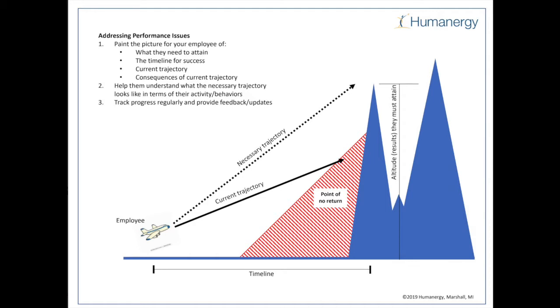...the mountains, if you like. And then the hypotenuse going from lower left to upper right is the necessary trajectory of our airplane to make it over those mountains.